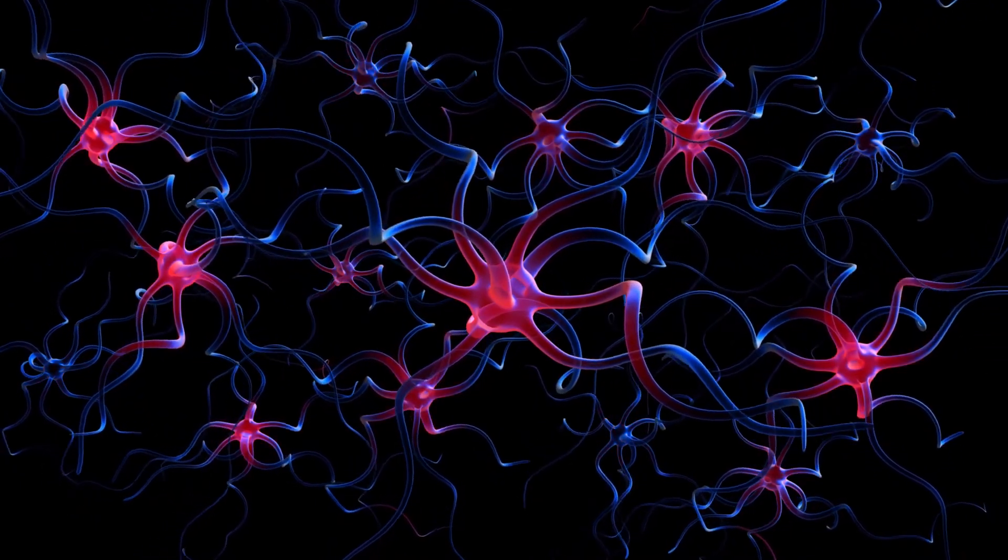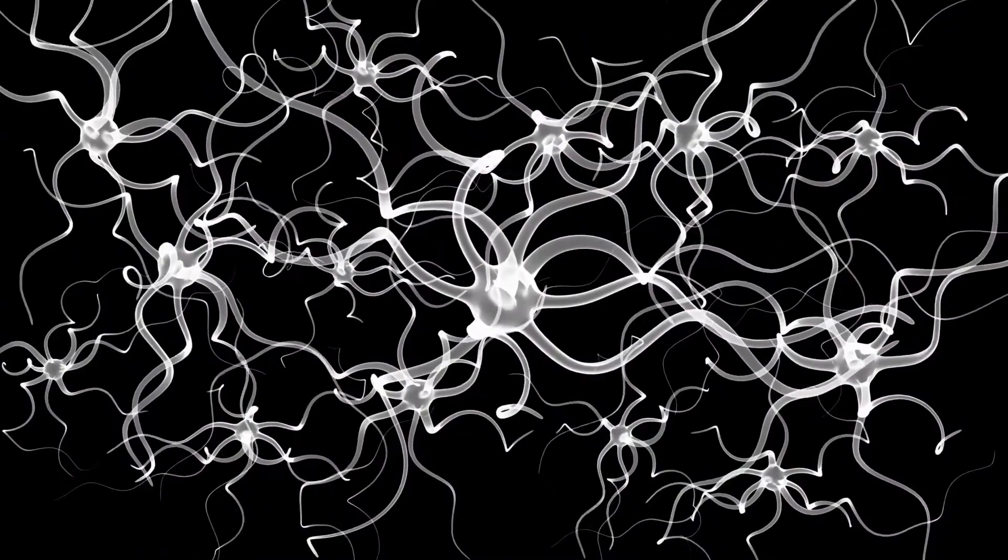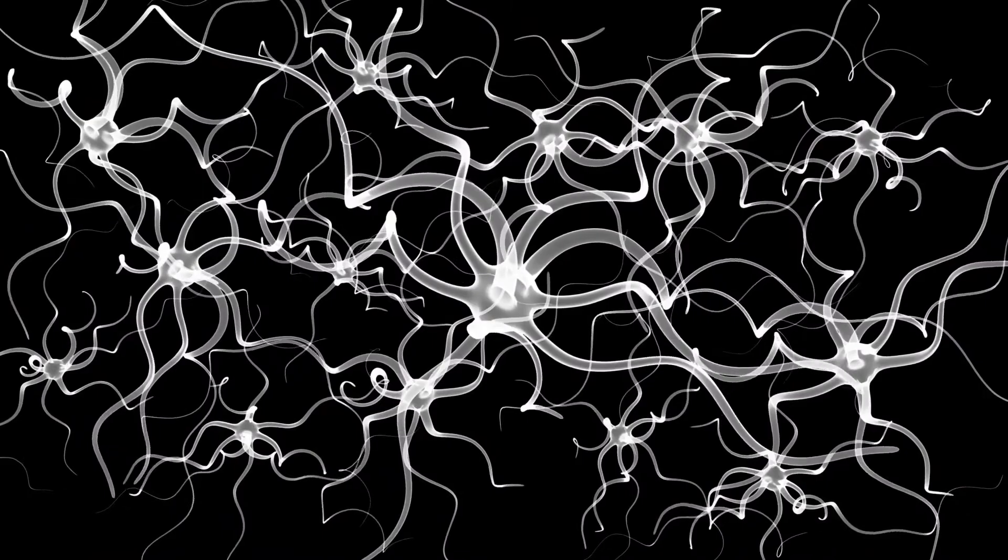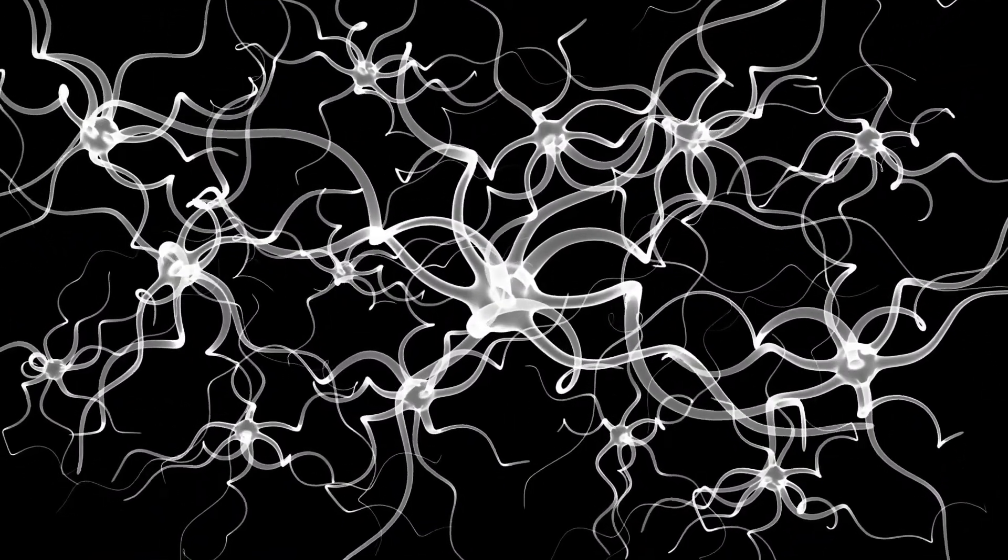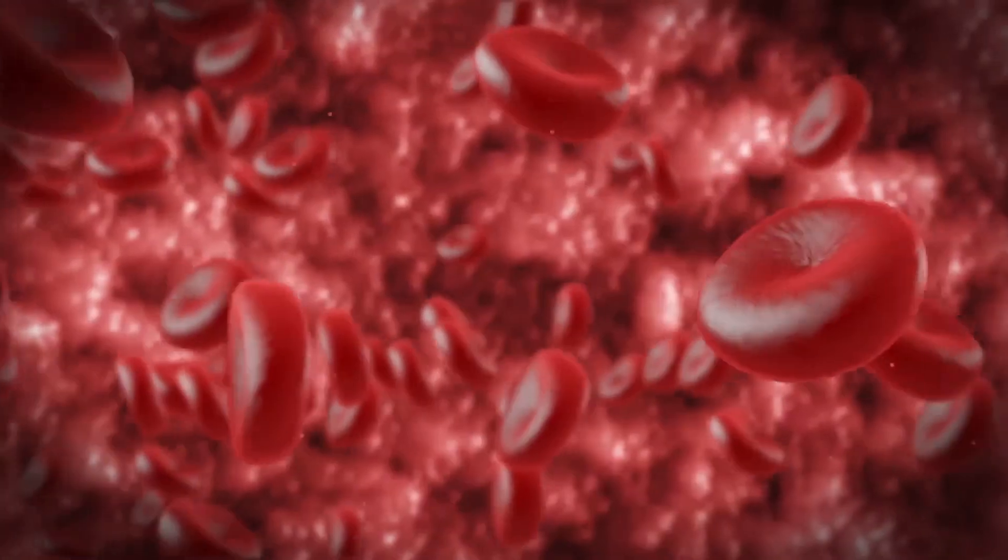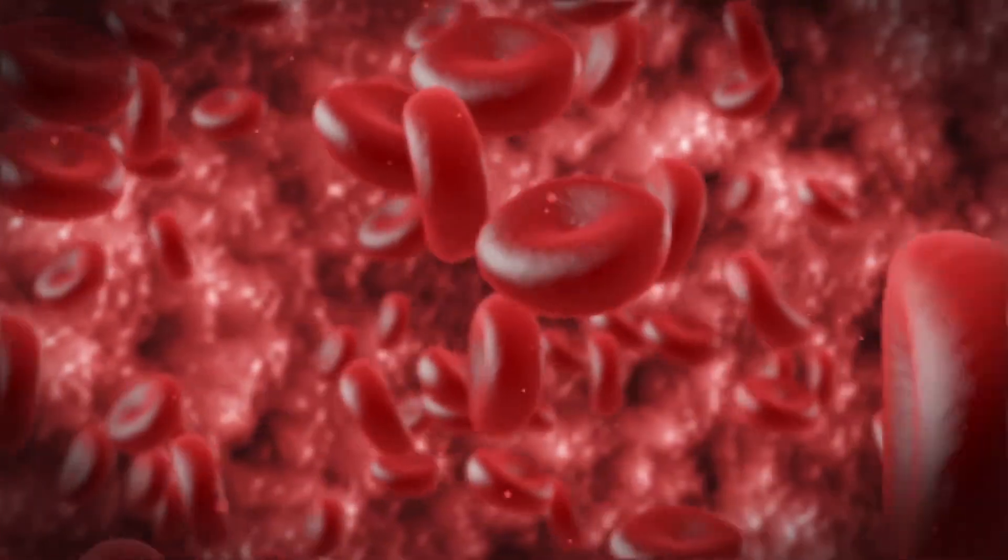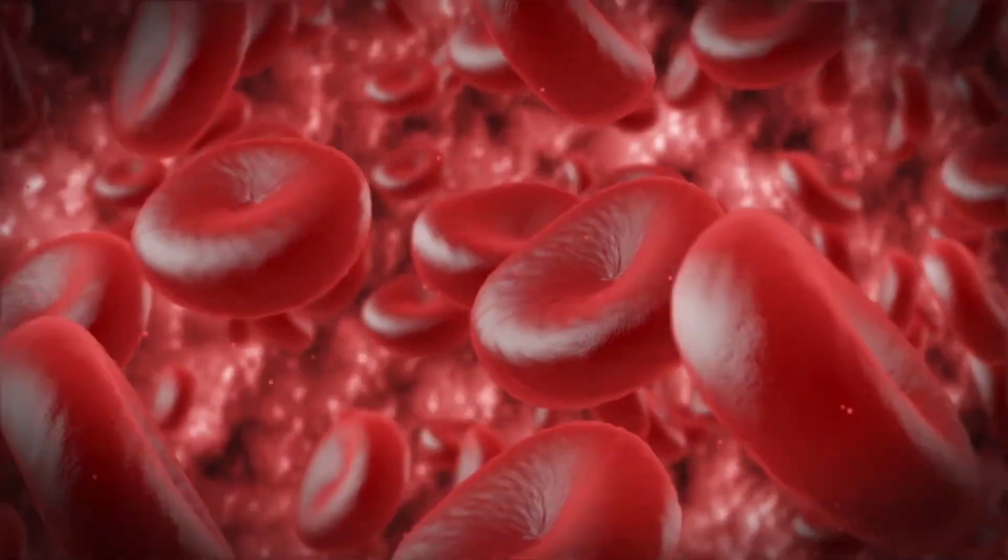Metaphase 1, the chromosomes that make up tetrads settle mutually on the equatorial plane of the cell. The process of this sequence is done randomly and there is a probability that it will be sorted by the number 2^n, where n represents the number of haploid cells.